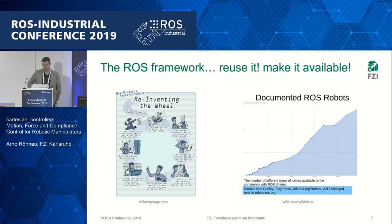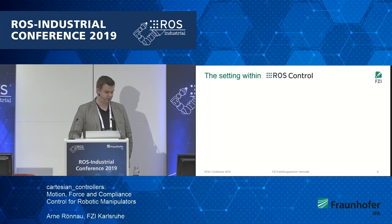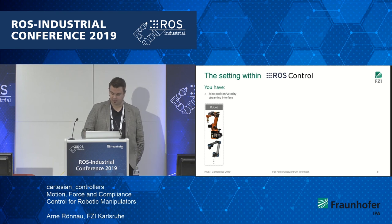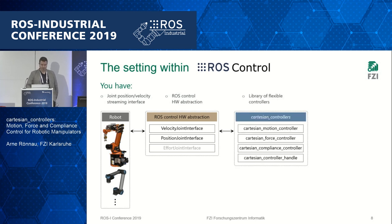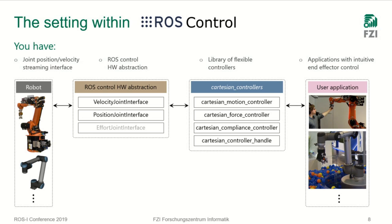So what is our approach? First of all, ROS — we want to reuse it, make it available. Then we use ROS control as it is. You need a robot with a position or velocity streaming interface, the ROS control hardware abstraction providing the accurate interfaces — and there are many available for many kinds of robots. Then you need our library, called Cartesian Controllers, which offers a few different options. You can set up a whole bunch of applications in very different variations; you don't always need a force-torque sensor.